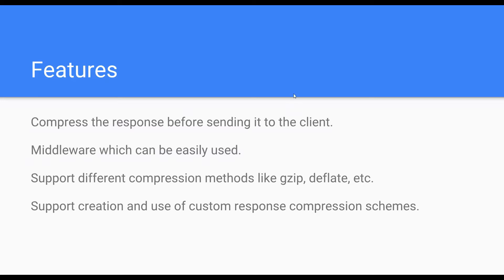The features of this response compression middleware — what simply happens is we configure the middleware in the startup.cs file of our ASP.NET Core application, and then that middleware takes care of compressing the response before sending it. It supports different kinds of compression methods like gzip, deflate, Brotli, etc. We can also create our own custom response compression mechanisms or algorithms and use them with this middleware if we have specific requirements.